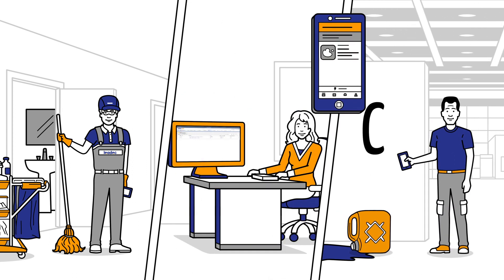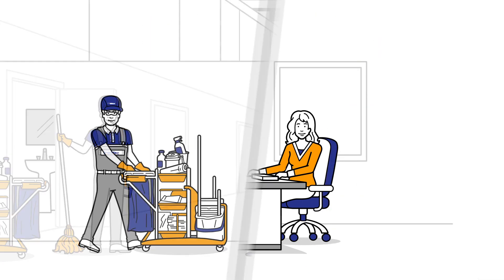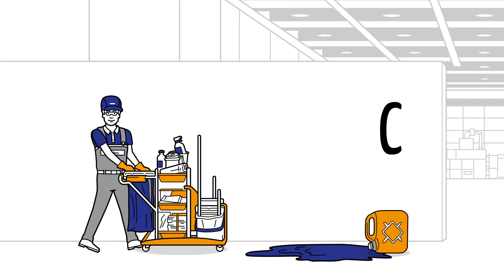Oil spill in corridor C. Lidec dispatcher Lisa receives the new case. Mike is currently available, so she sends him the work order. In no time at all, Mike is on his way to corridor C.